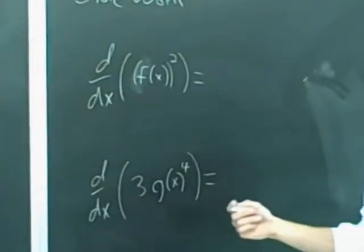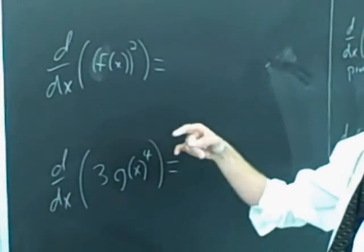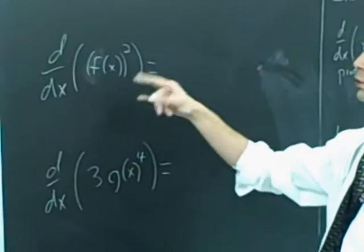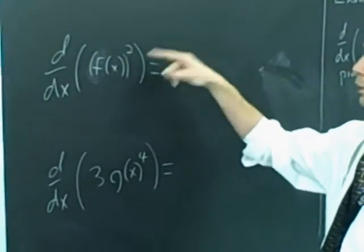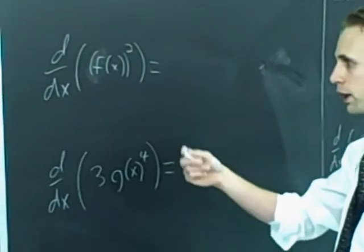Oh, I got a little side work over here. What happens when you differentiate a composition of functions? You need the chain rule. Let's say that I asked you to differentiate this. There are two functions present here. There's the squaring function, the outside, and the f of x.